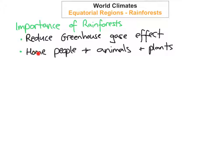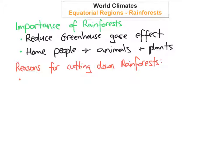Just one thing to note: up to one-fifth of all bird species are actually found in the Amazon rainforest in Brazil. Unfortunately, it's not just one reason why rainforests are being destroyed — it's a number of reasons.